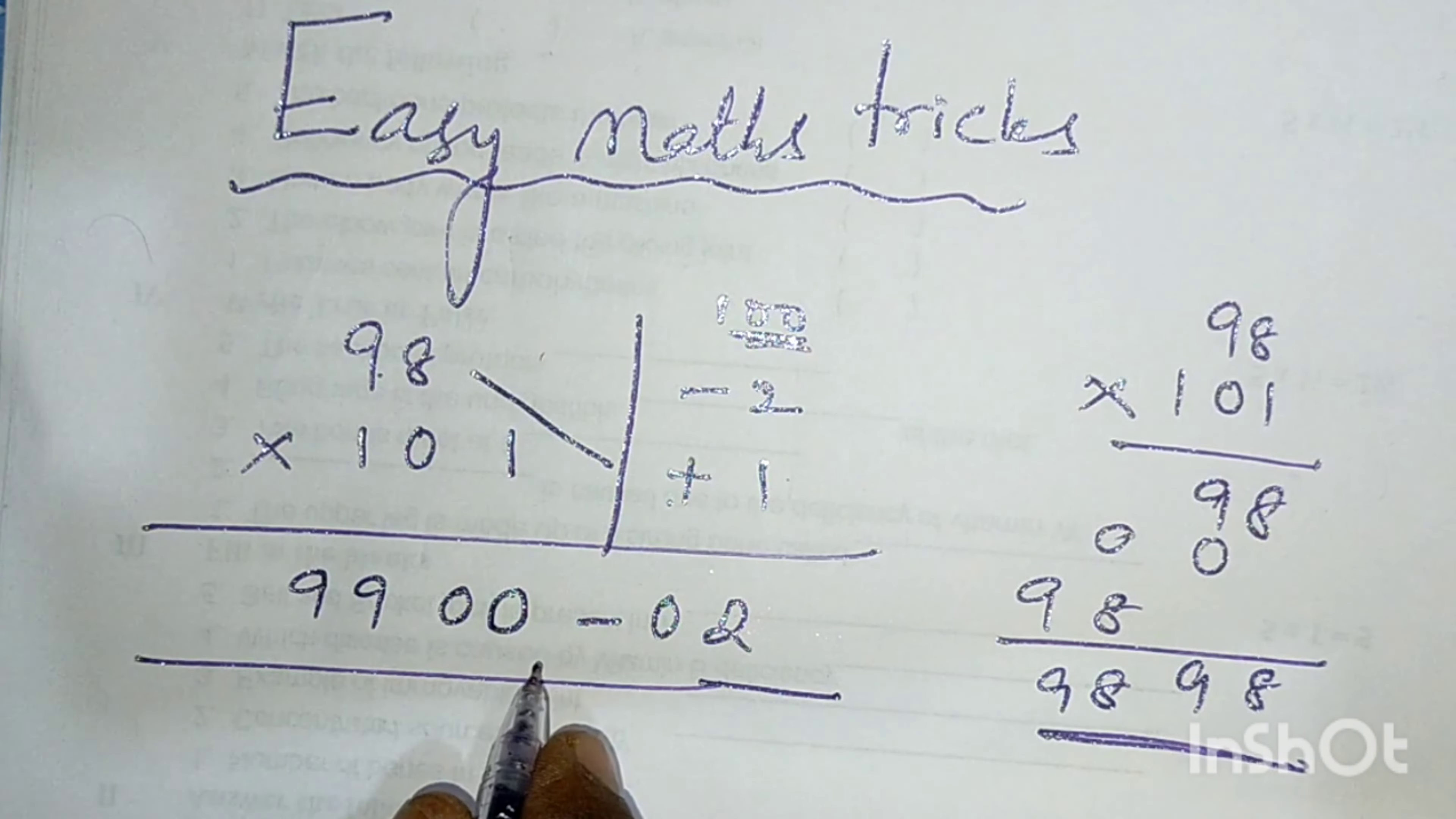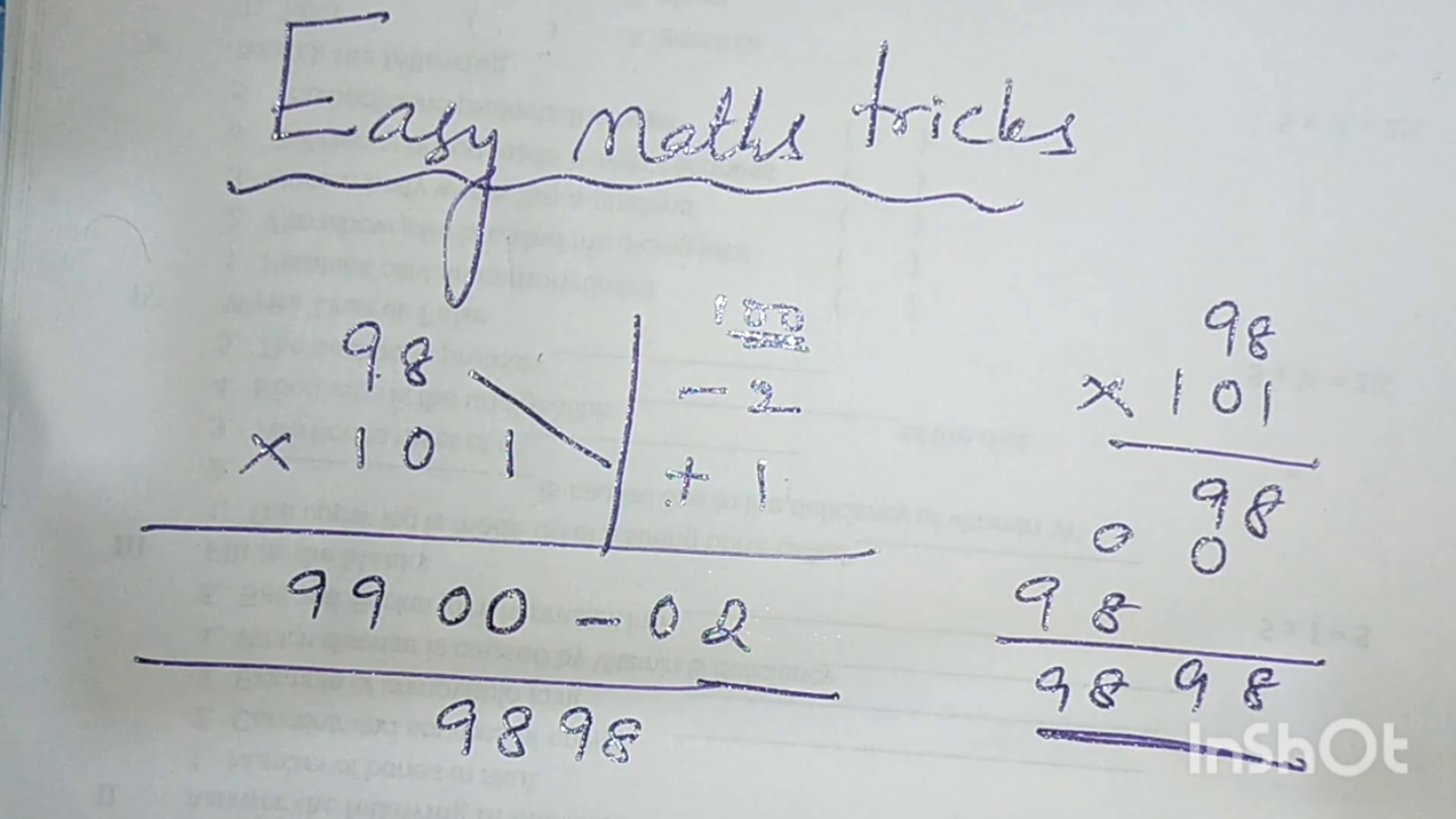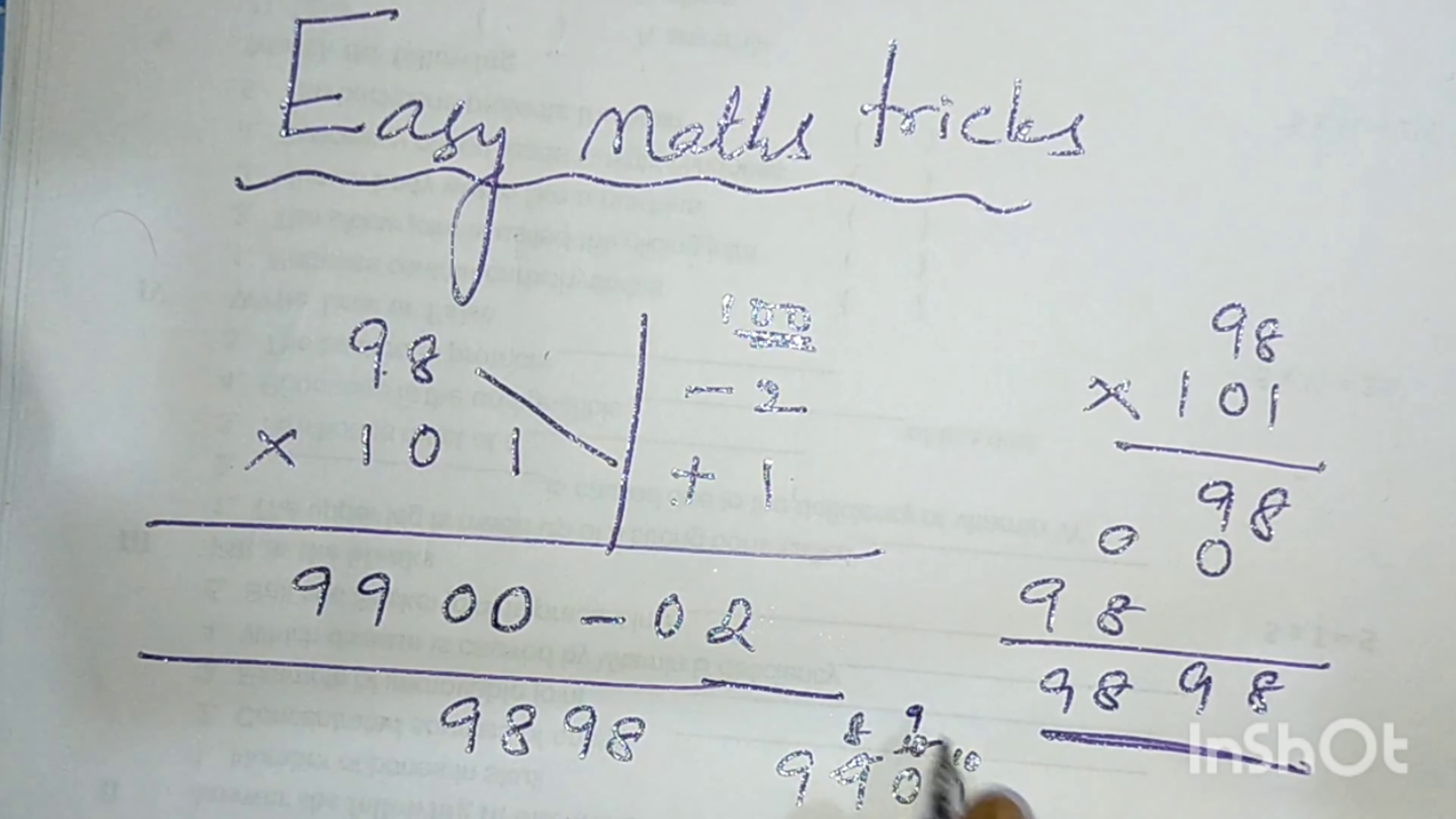Now what is the answer? 99 hundred minus 2 is nothing but 9898. It will come once you check. 9 minus 2 it become, you from here you take 10 and it become 10 and it is 8.